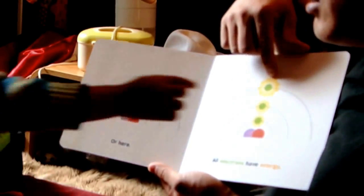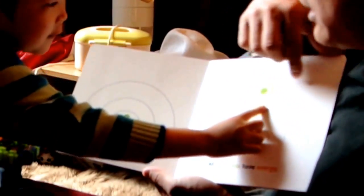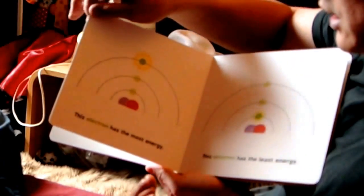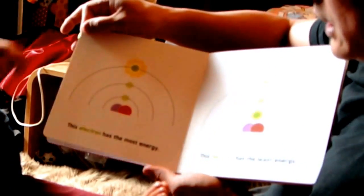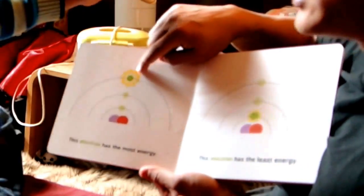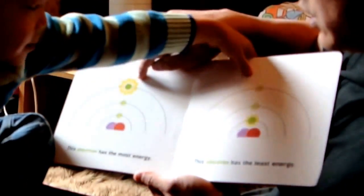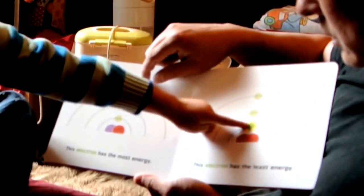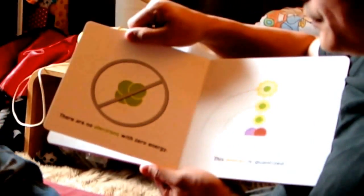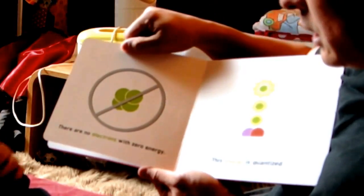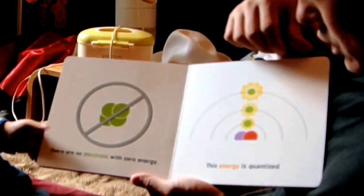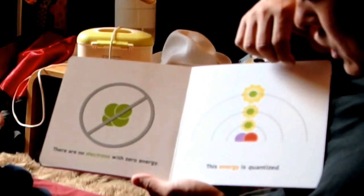All the electrons have energy. This electron has the most energy. Which one has the least energy? This one — the bottom one has the least energy. Are there electrons with zero energy? No. All electrons have energy.